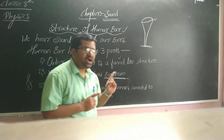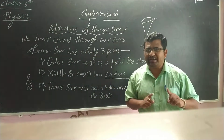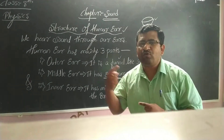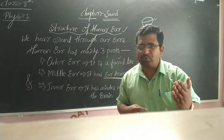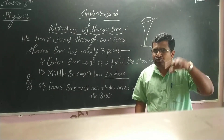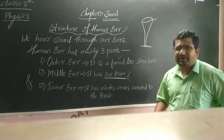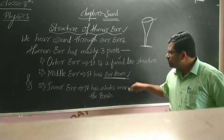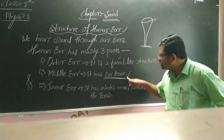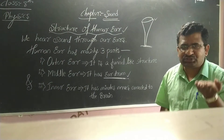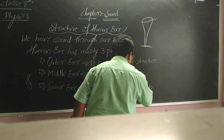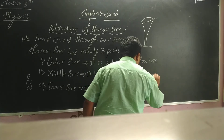The eardrum vibrates because, as I explained at the beginning of this lesson, sound is a form of energy. Sound propagates in the form of longitudinal waves from one point to another. Because sound waves carry energy through vibration, those sound waves cause the eardrum to vibrate about its main position, and this vibration generates signals.